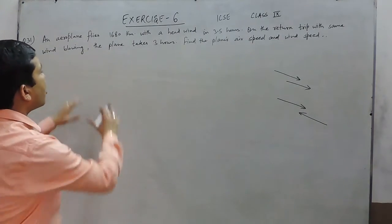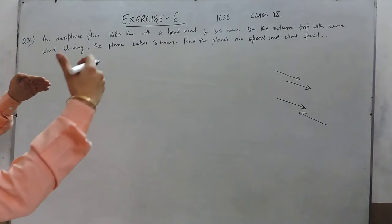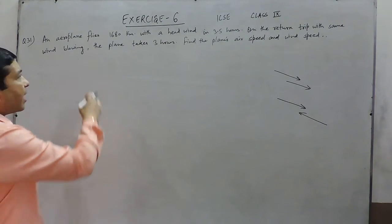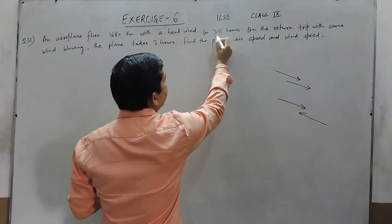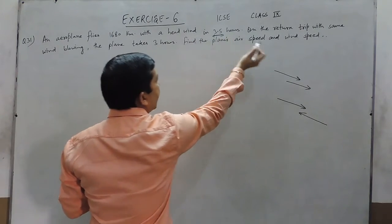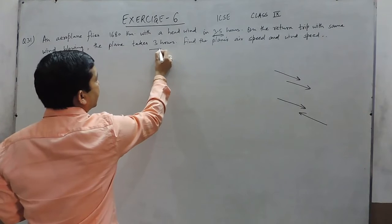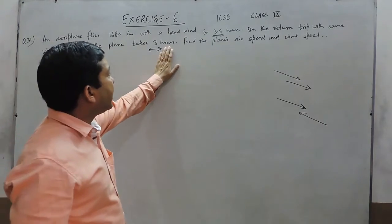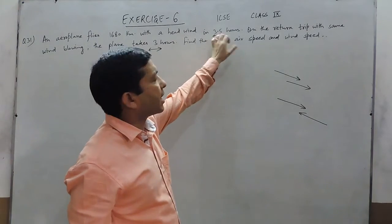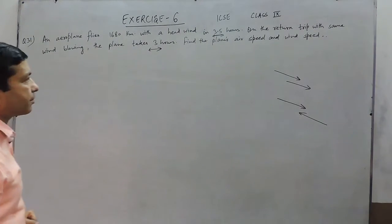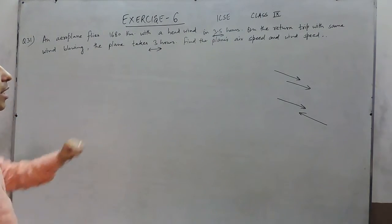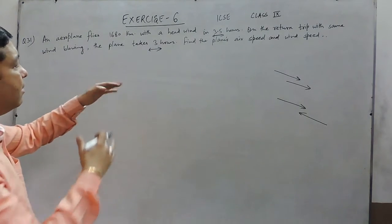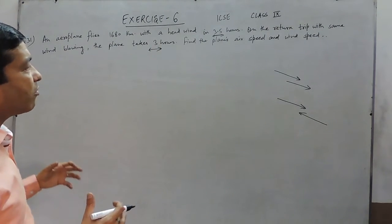But when we talk about the aeroplane, the aeroplane and the wind also act in the same manner. When we talk about our headwind, it takes 3.5 hours, and on the return it takes 3 hours. Now the important thing is that here it is taking less number of hours compared to the first case, which means in the first case it is going against the wind and in the second case it is going with the wind.